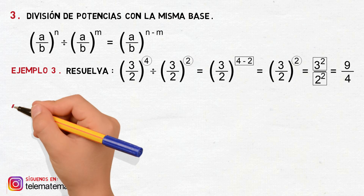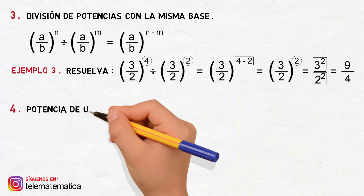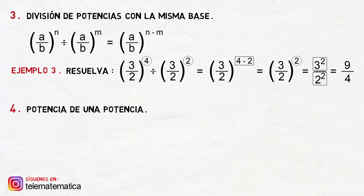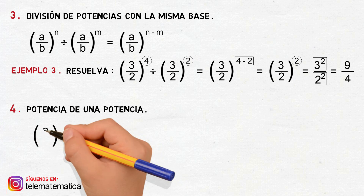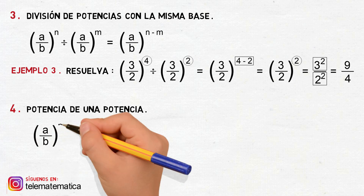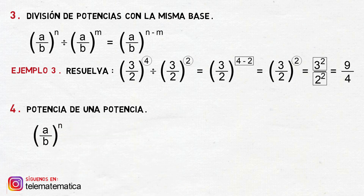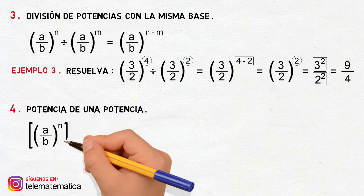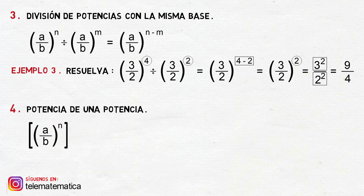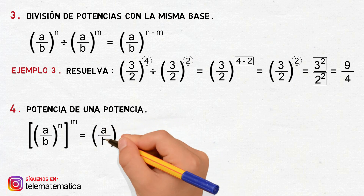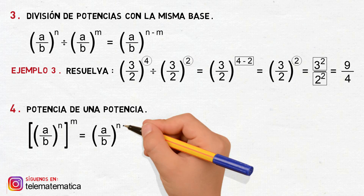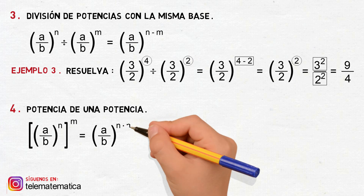Propiedad número 4: potencia de una potencia. Esta se define como A dividido para B elevado a la N, y esta potencia elevada a la M. Va a ser igual a conservar la base A dividido para B y multiplicar los exponentes.